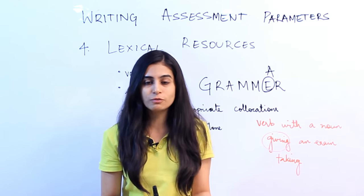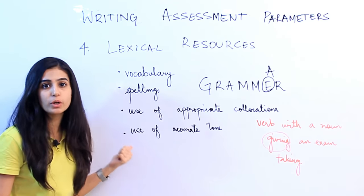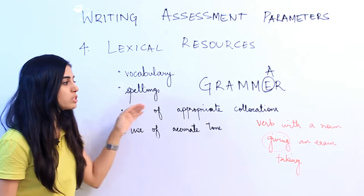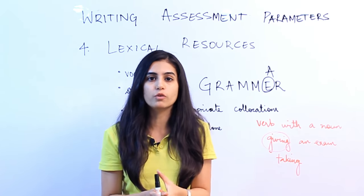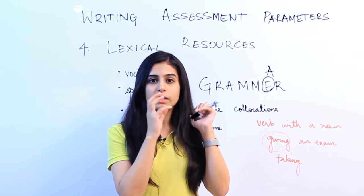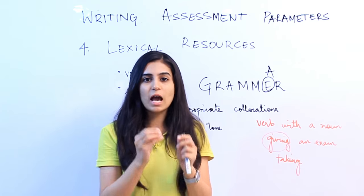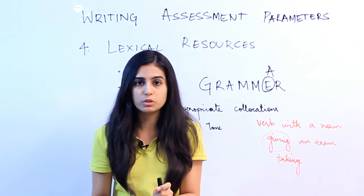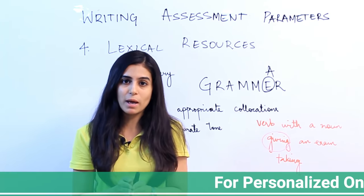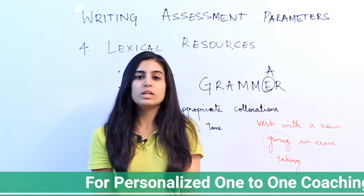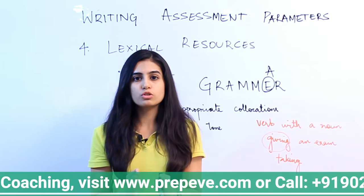So the scorecard you get on these parameters decides whether you get a band score above 7 or 8 or something below that — essentially whether you have healthy English or not. If you don't provide value on these parameters — proper vocabulary, spellings, collocations, accurate tone, task achievement — you would score poorly. Make sure you give the examiner what they are looking for. Each of the four parameters carries equal weightage of 25%, so value each one equally.